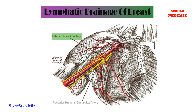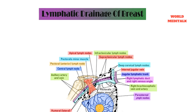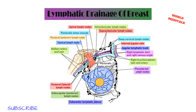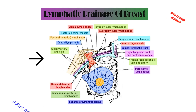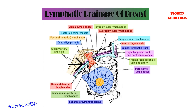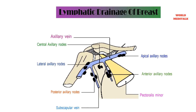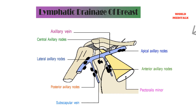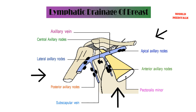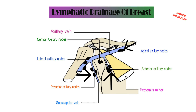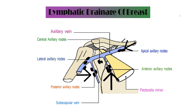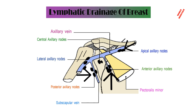The next group is the central group of lymph nodes. They are clinically important because they are most easily palpable. The lateral group lies close to the humerus at the lateral aspect of the axillary vein. The posterior group is also called the subscapular group. The apical group lies above the pectoralis minor muscle and medial to the axillary vessels. The internal mammary nodes are situated retrosternally, and the medial half of the breast drains into this group.